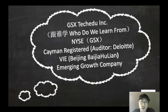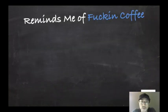The company is registered in the Cayman Islands. Its auditor is Deloitte. The company is operating under a structure called VIE, or Variable Interest Entity. It is classified as an emerging growth company. When I first looked at this company, it does remind me of another company that recently was in the news, which is Luckin Coffee.